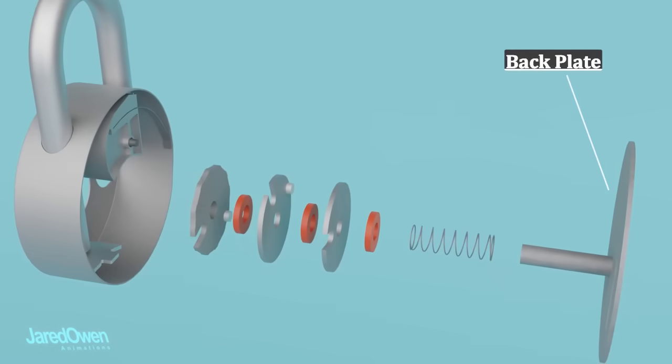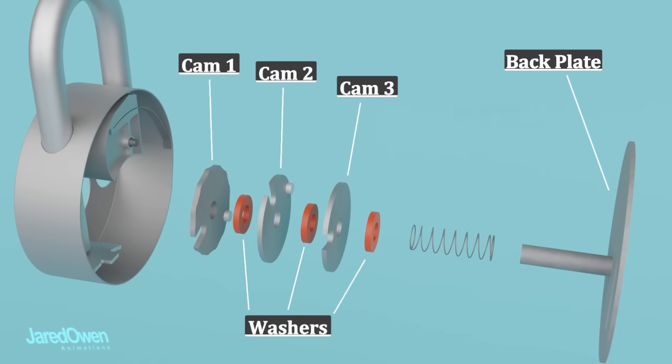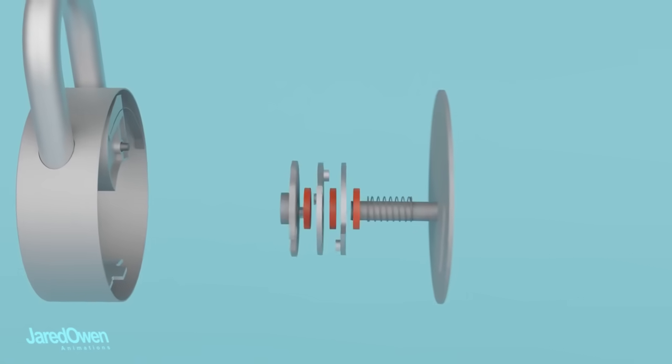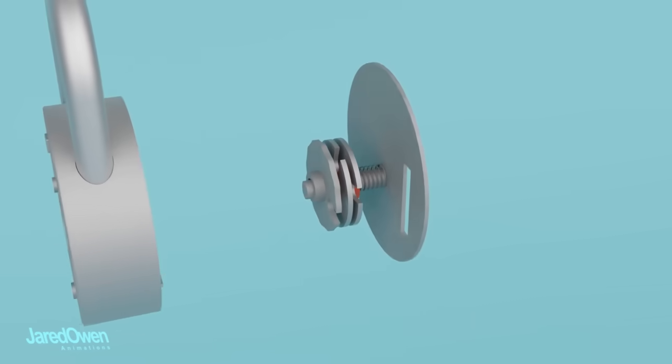The back plate has a bar sticking out. It holds the three cams, washers in between, and a spring at the end. The spring ensures that the three cams and the washers are all pressed together.